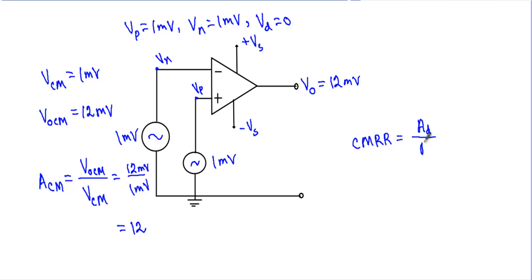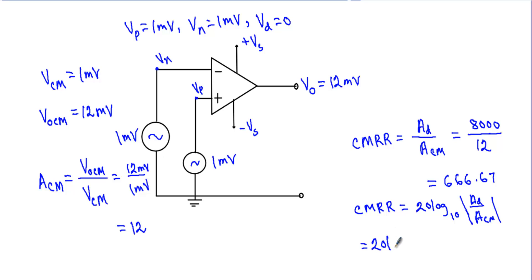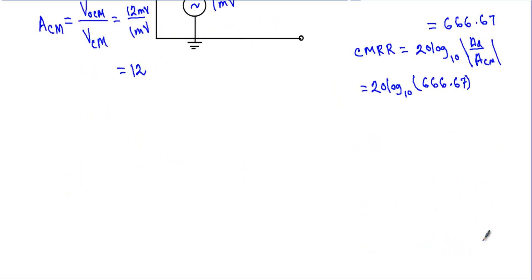The common mode rejection ratio of the operational amplifier circuit is the ratio of differential gain to common mode gain. The differential gain was 8000 and the common mode gain is 12, so CMRR equals 8000 divided by 12, which equals 666.67. We can also calculate CMRR in decibels: CMRR equals 20 log base 10 of AD divided by ACM, which gives 20 log base 10 of 666.67, equal to 56.48 decibels.